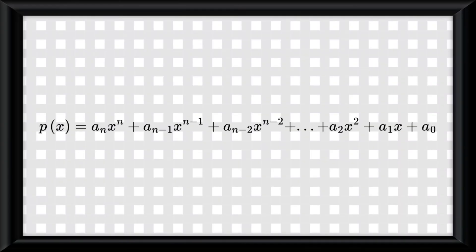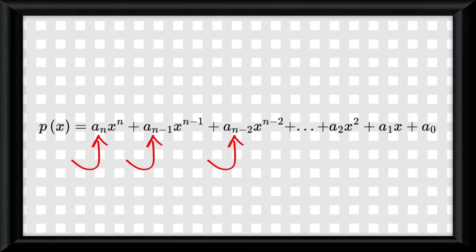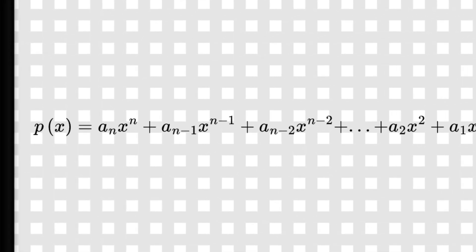On the screen now is the technical way that a polynomial function is written. Though this may look intimidating, understand that a sub n is the coefficient, and n is the degree. Also notice that throughout the equation the degree keeps getting smaller.